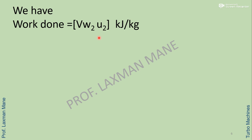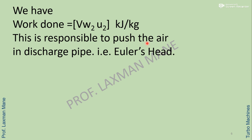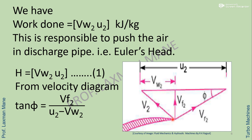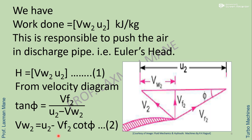Work done equals vw2 times u2 in joules per kg. This is responsible for pushing the air into the discharge pipe, and hence it is called Euler's head: H = vw2 × u2 (equation 1). From the outlet velocity triangle, tan(phi) = vf2 / (u2 − vw2), so by rearranging: vw2 = u2 − vf2 × cot(phi) (equation 2).